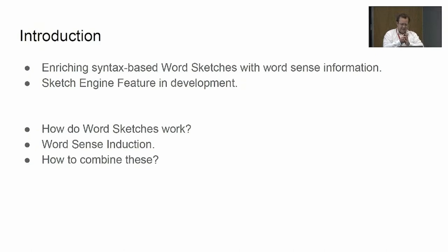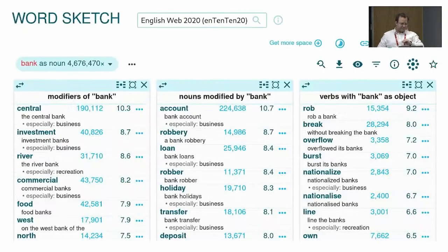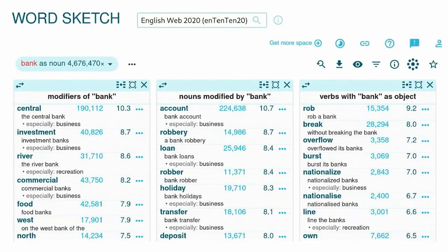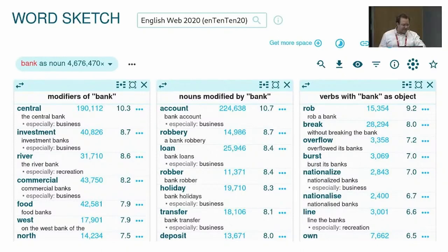First, just to recapitulate how a word sketch might look: here is the result for the word 'bank.' The columns show different grammatical relations which the collocates of the word bank can appear in. For example, you can have a central bank, investment bank, or a riverbank, but at this point we can't really distinguish between investment bank and riverbank, but we would like to.